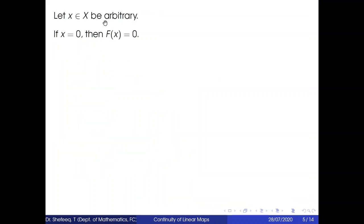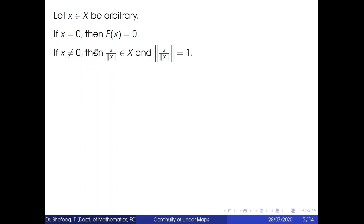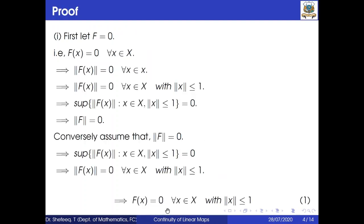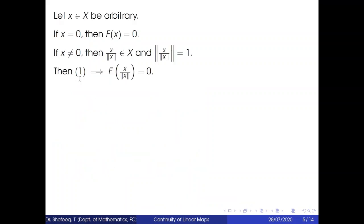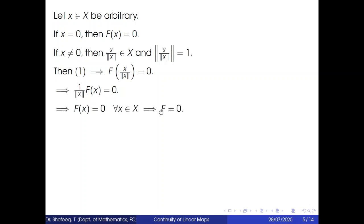Let x in X be arbitrary. If x = 0, then f(x) = 0 since f is a linear transformation. If x ≠ 0, then x/||x|| belongs to X and has norm equal to 1. By equation 1, f(x/||x||) = 0, which means (1/||x||)·f(x) = 0, so f(x) = 0. This holds for all x in X, so f = 0. This completes the proof of the definiteness property.